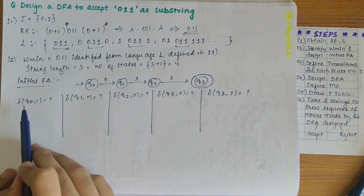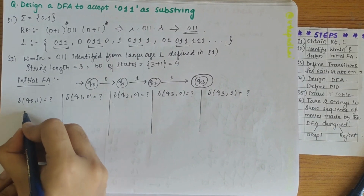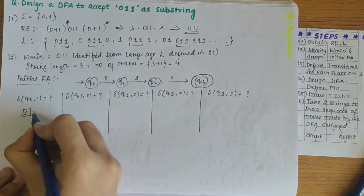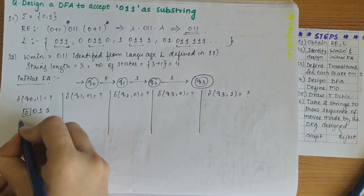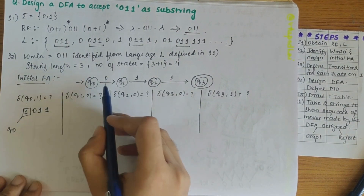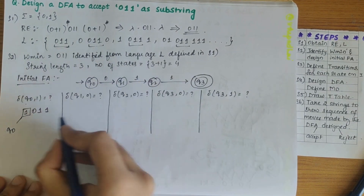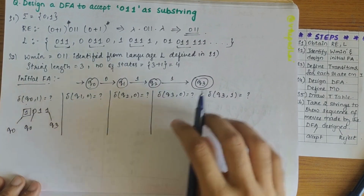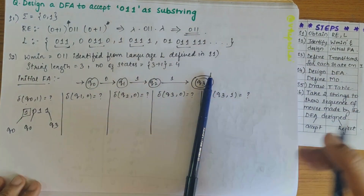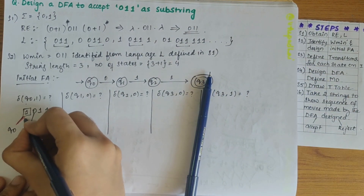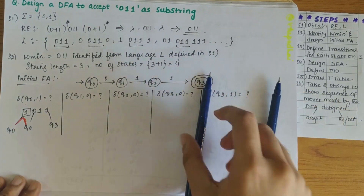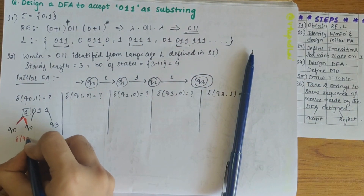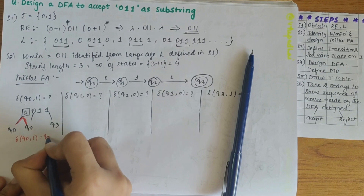Let's solve these one by one. First, transition of Q0 on 1. We place a 1 before 011. Since the 011 pattern starts from Q0 to Q3, the only possible transition is that Q0 on 1 should give Q0 itself. So the transition of Q0 on 1 gives Q0.